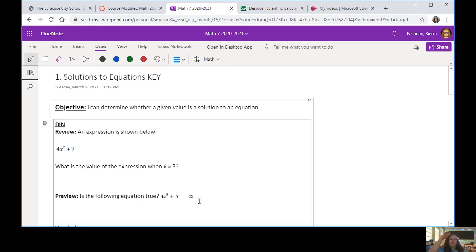So take a second and complete the DIN review for me, and then look at the preview and see if you can answer that one as well. Alright, hopefully you paused your video and you looked at the DIN review and preview questions. The review is actually straight from our Unit 5. They're giving us an expression and they want us to find the value of the expression when x equals 3. So I'm going to take that expression and I'm just going to substitute, changing that variable x to the value that they gave me.